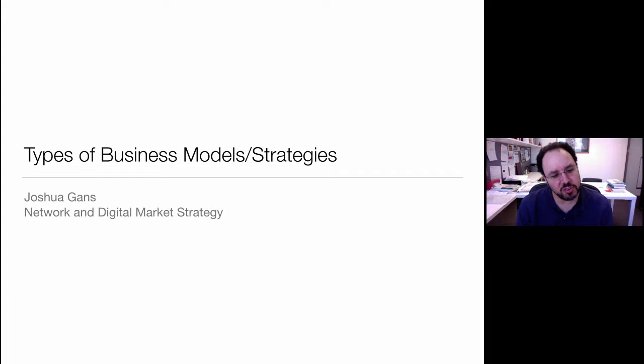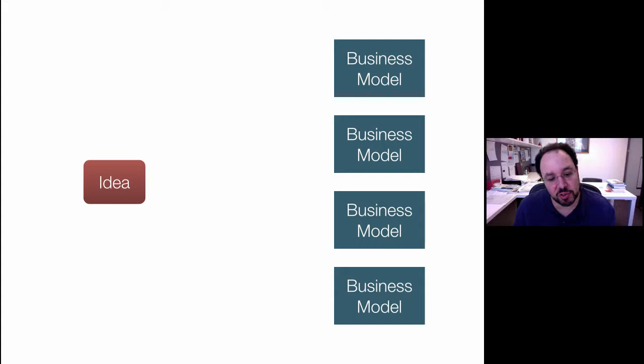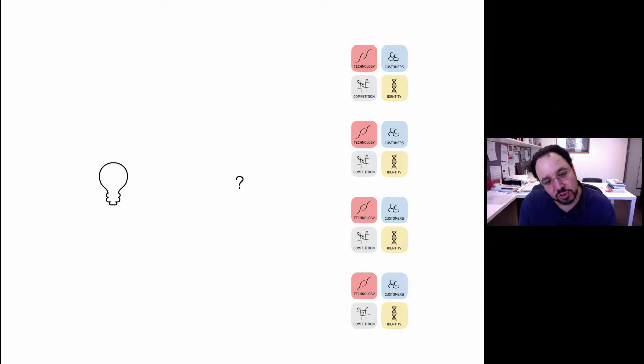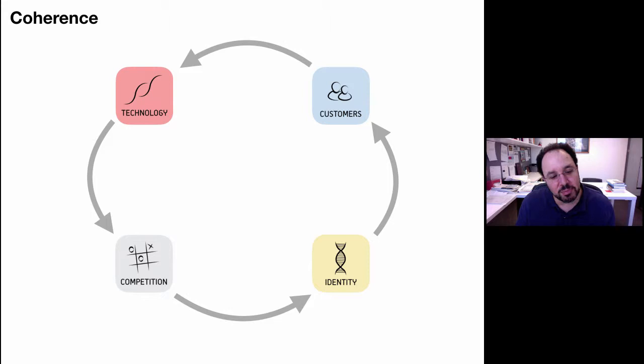We're now going to turn our attention to classifications of the types of business models that might arise from different constellations of the four choices that guide entrepreneurial strategy. You have an idea and several business models to choose from. Each business model is a different constellation of technology, customers, competition, and identity. The first thing you want to do to identify a business model is find something that is coherent — meaning these four choices fit together, driving and reinforcing one another.